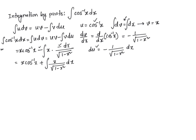Now at this point, I am going to go ahead and integrate just this part. I am going to do the substitution again. So the integral is x over square root of 1 minus x squared, dx.